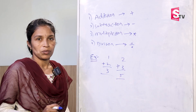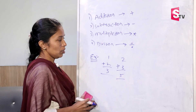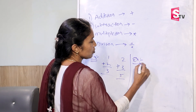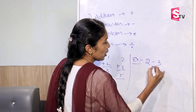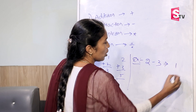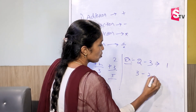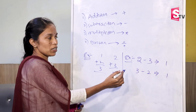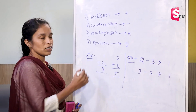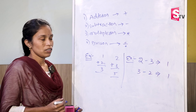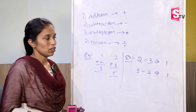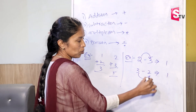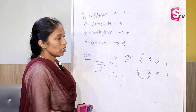We will take one example. What is the value of 2 minus 3? 1? 3 minus 2 is 1. Which one is correct? You can tell me. We have to understand the basics. So, 2 minus 3 and 3 minus 2 — there is a difference.